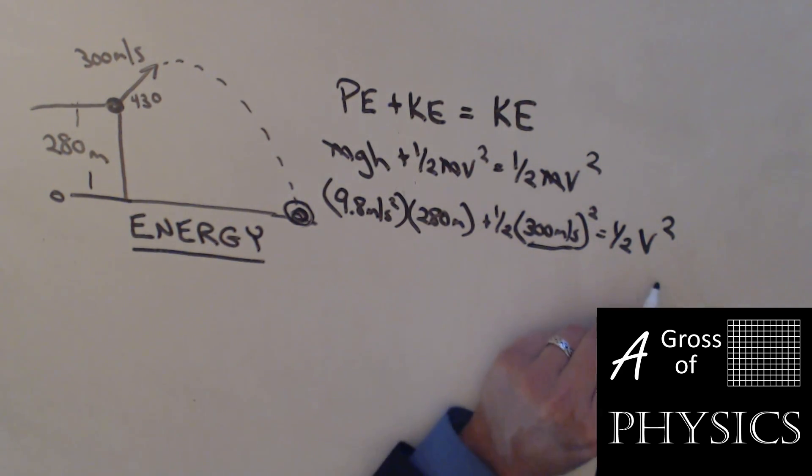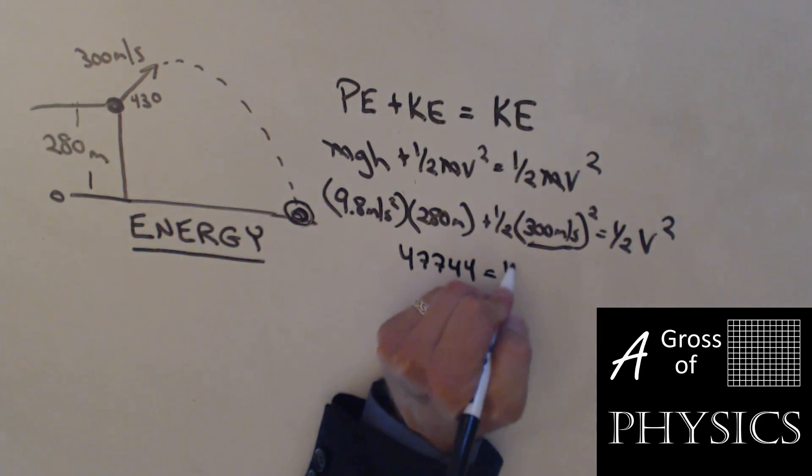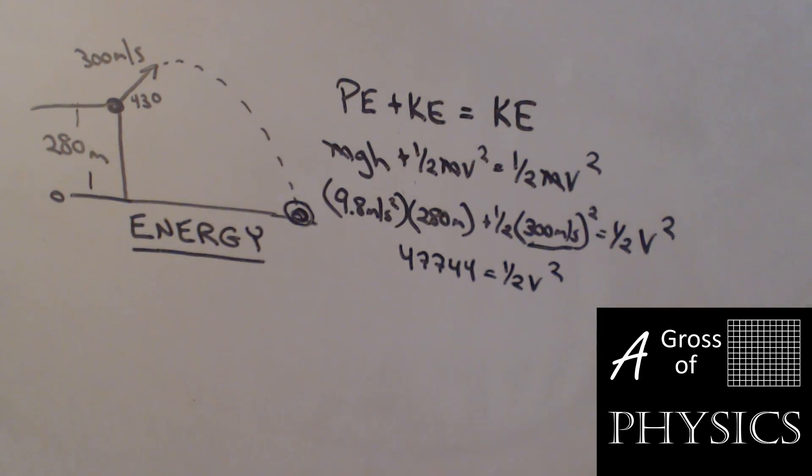All we don't know is v squared. Let's take 9.8 times 280, add that number, plus 0.5 times 300 squared. This whole term is 47,744, and that's going to equal one-half v squared. Divide that number by 0.5, take the square root, and you get v to be 309 meters per second.